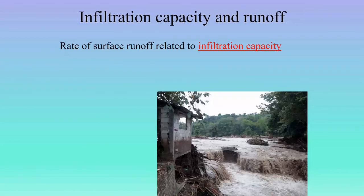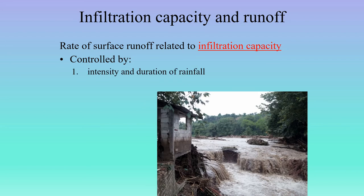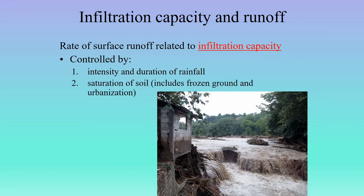The rate of surface runoff — the water that runs off the surface into streams — is related to the infiltration capacity of the ground, which is the ability of the ground to absorb water. This is a function of the intensity and duration of rainfall. If it's coming too fast, the ground can't absorb it quickly enough and a lot more becomes overland flow or surface runoff. If it rains for weeks, the ground becomes saturated and excess water becomes surface runoff.